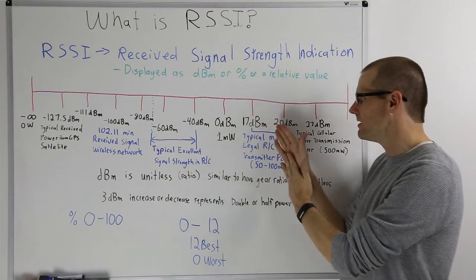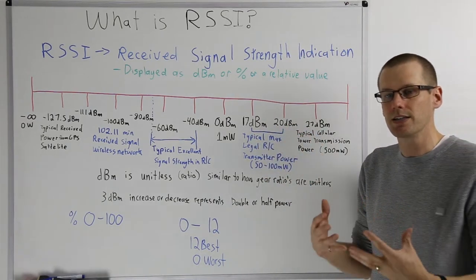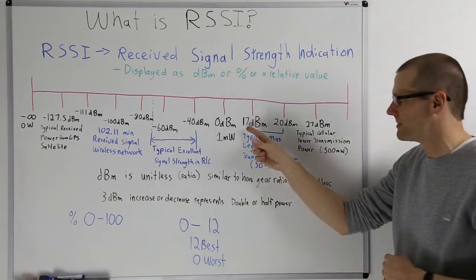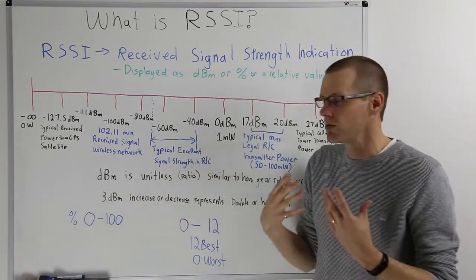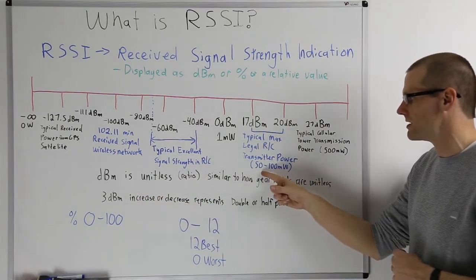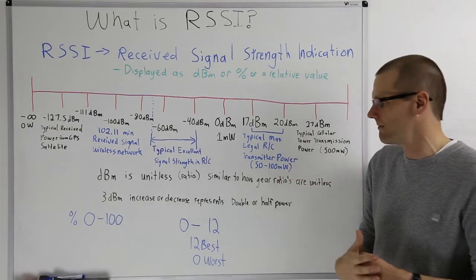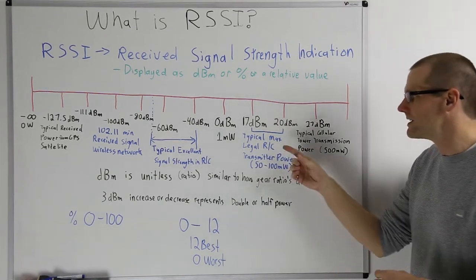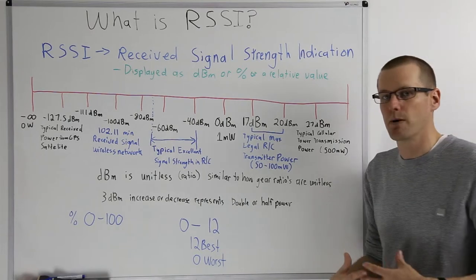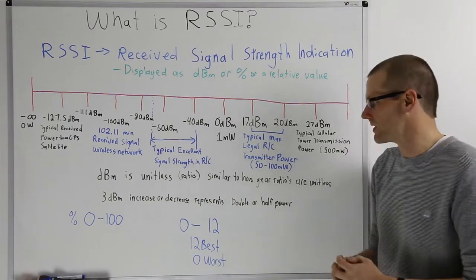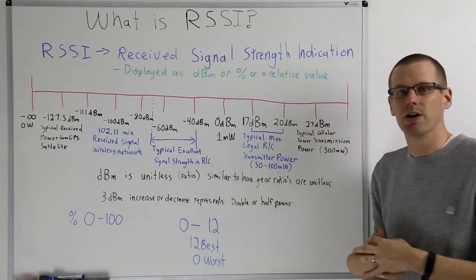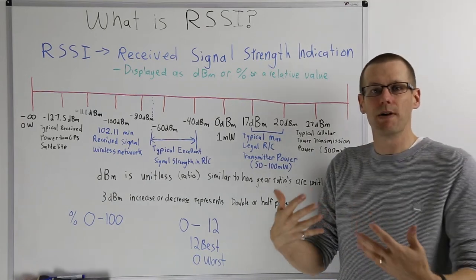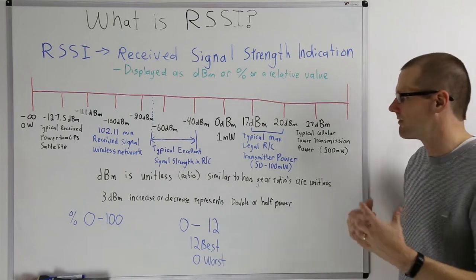As we move to the left, we get 17 to 20 dBm. This is going to be power ranging from 50 to 100 milliwatts. Going from 17 to 20, we actually double our power where 100 milliwatts is at the 20 dBm value and 50 milliwatts is at the 17 dBm value. This is the typical max legal RC transmitter power, probably worldwide that you can use.